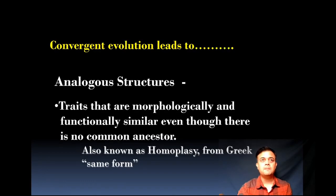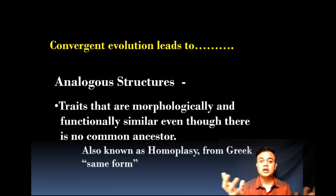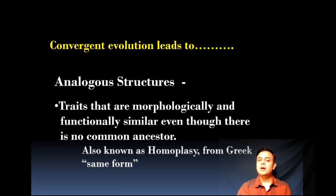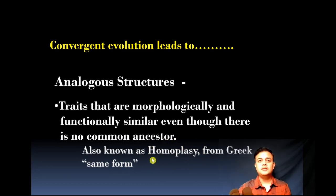Convergent evolution leads to analogous structures. The wings of butterfly, bat, and bird are all analogous structures because deep inside their evolutionary legacy they are not anatomically similar, though functionally they are all used for locomotion. Traits that are morphologically and functionally similar even though there is no common ancestor are also known as homoplasty, from the Greek meaning 'same form.' Analogous sequences are referred to as homoplastic sequences.